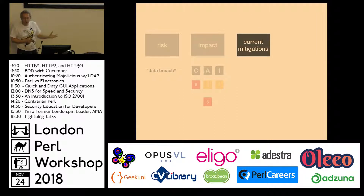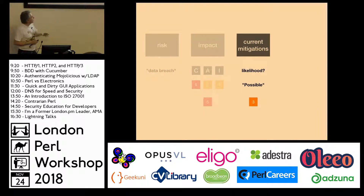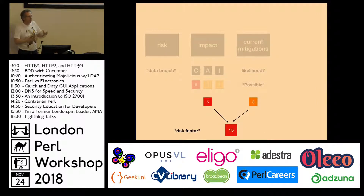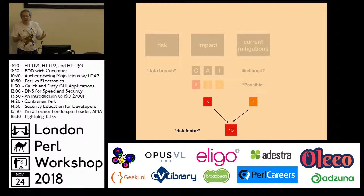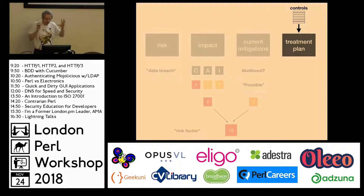You then think about what you're currently doing — hopefully you've got some stuff in place to mitigate against that risk. Then you think about the likelihood of that risk happening given everything you're doing now, give that a rating, multiply these together, and you come up with a risk factor. Very often when you first flush out your risks you realize you're not actually doing that well at managing them.